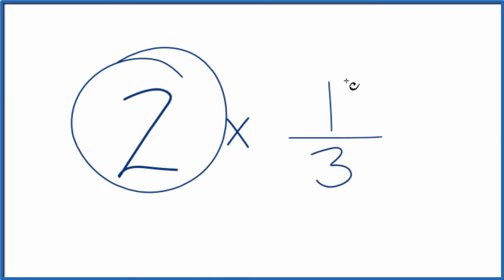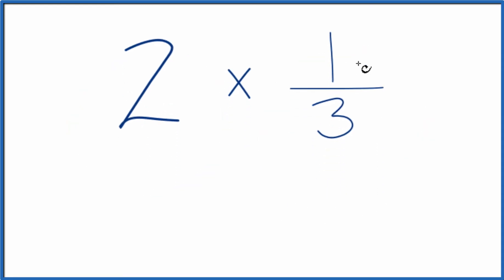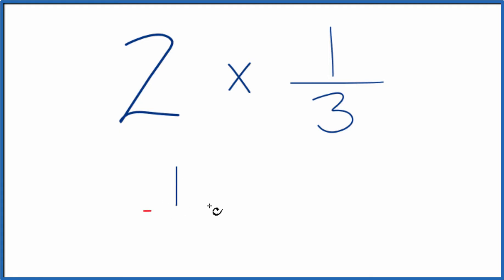Let's multiply two times one-third. So there are two ways to do this. First, because we have two of these one-thirds, we could just say one-third plus one-third.